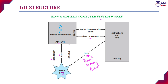With direct memory access, without the intervention of the CPU, the device controller can send and access data directly to the main memory. It is also faster for sending and receiving large amounts of data. This is the typical input-output operation and how it is implemented. This is all about IO structure.